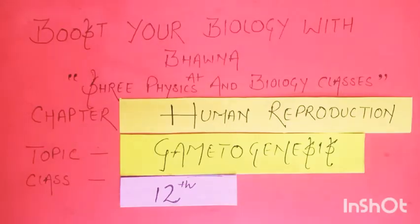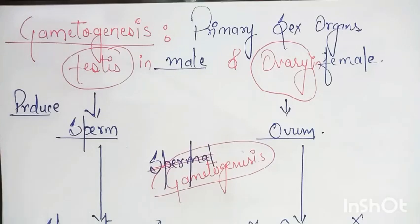Hello dear students, welcome to Shri Physics and Biology Classes. This is Bhavna here again in twelfth bio series. The chapter is human reproduction and the topic is gametogenesis. First of all, we are going to discuss the term gametogenesis.